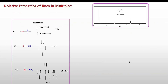Coming back to the spectrum of ethyl acetate, the quartet has lower intensity than the triplet. Why is the intensity different for each multiplet? Using the probability method: a single CH proton can either oppose or align with the applied magnetic field, giving two possibilities. This gives a 1:1 ratio for the peaks in a doublet.